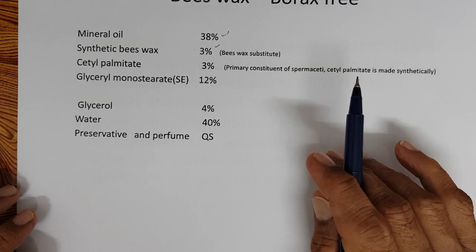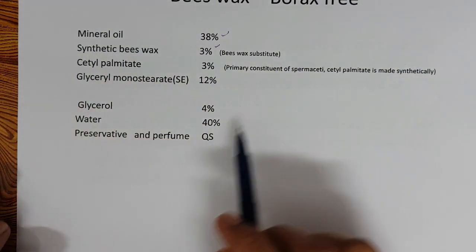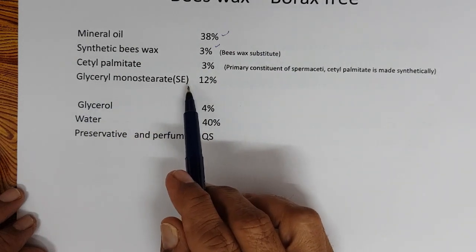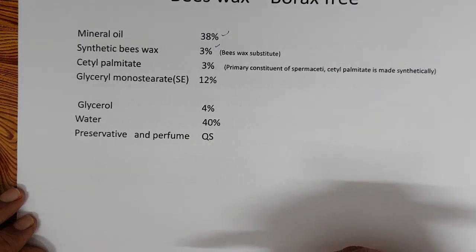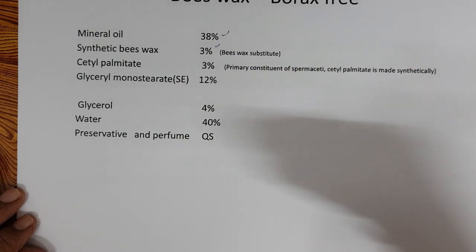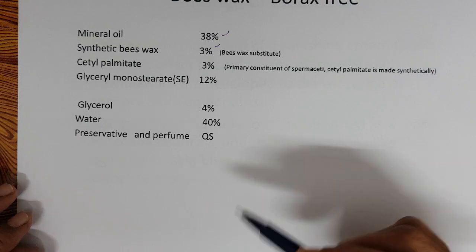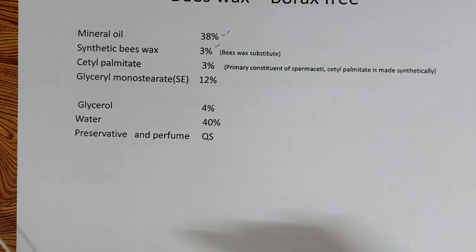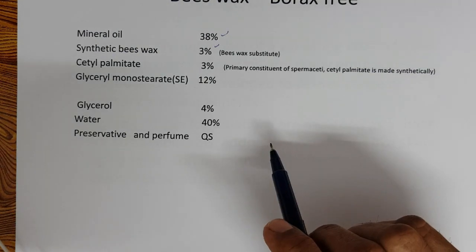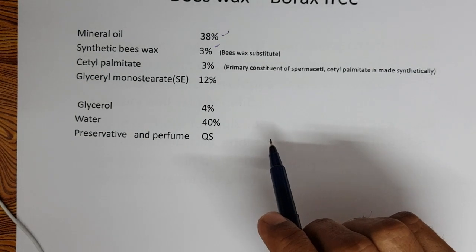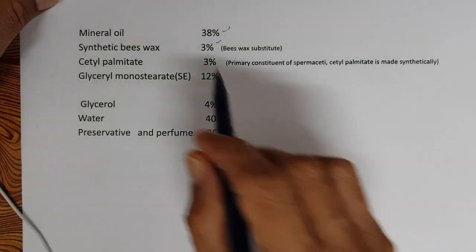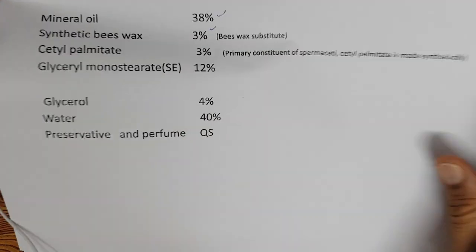This formula can be further modified in many ways. You can reduce GMS self-emulsifying and use other non-ionic emulsifiers. To give body to the cream you can add a little cetyl alcohol or paraffin wax. You can play with the emulsion by altering and adding new ingredients to stabilize the cream. This is the basis for evolving formulations for beeswax borax-free cold cream.